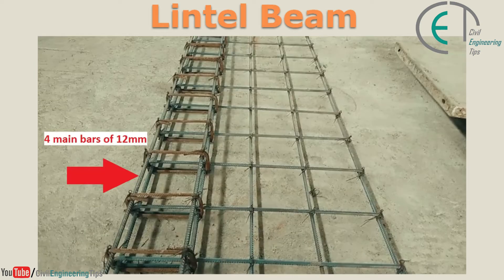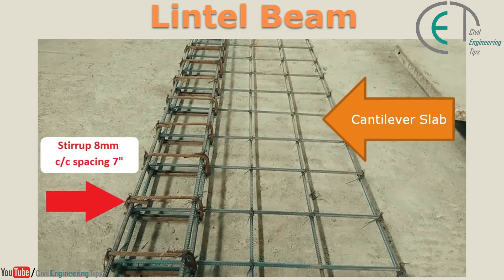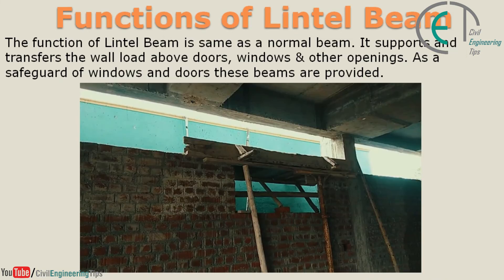Here you can see a lintel beam and a cantilever slab together. For the lintel beam, we provided four main bars of 12 millimeter and stirrups of 8 millimeter with a center-to-center spacing between two stirrups of 7 inches. The reinforcement of the cantilever slab has been added with the lintel beam.